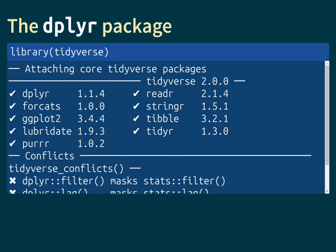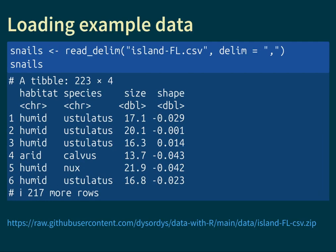Today we're going to be looking at the dplyr package. All the functions we're going to be working with today are parts of this package called dplyr. As has become a bit of a habit, we shall use the Galapagos land snail data as illustrations for all the functionalities we're going to be learning about. We begin by loading this dataset and assigning it to a variable called snails.